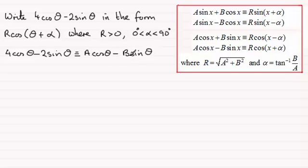And from here I can see that a must be 4. So I'll just put that in here, where a equals 4. And b is not minus 2, it's just the 2. We've got the minus here. So b is equal to 2.